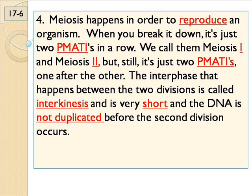If the start-off cell has a diploid number of four, when you're done meiosis the haploid number is going to be two. That way, when that egg with two chromosomes joins the sperm with two, you're right back to four — which is what the mom and dad have. That's why this works.